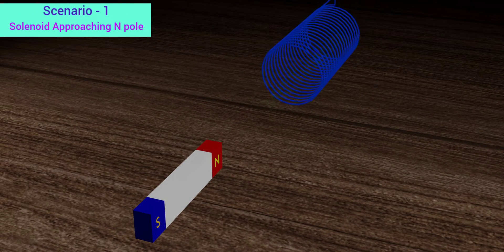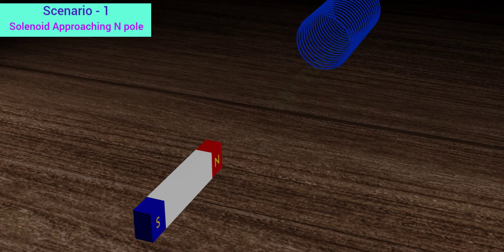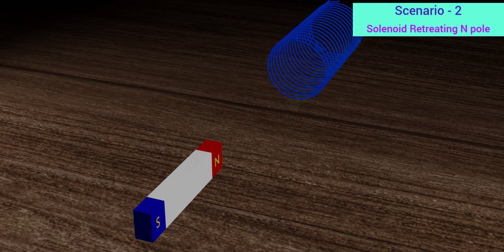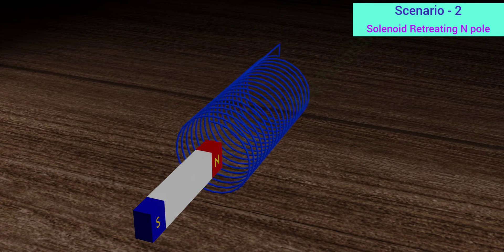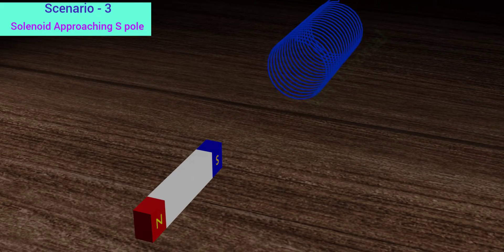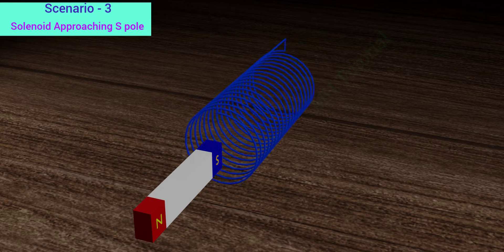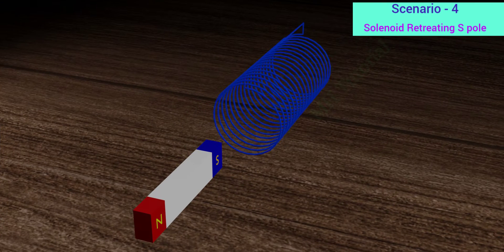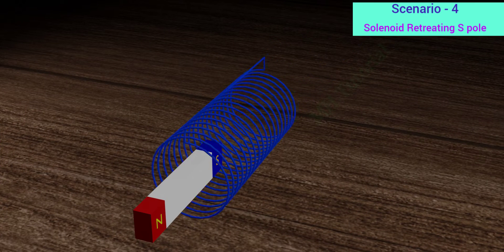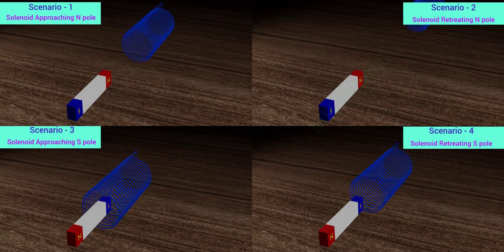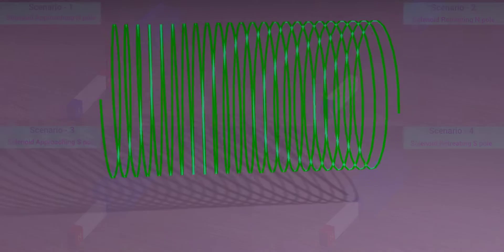In the first situation, say the solenoid approaches the north pole of the magnet. In our second situation, the solenoid moves away from the north pole of the magnet. In the third scenario, let the solenoid approach the south pole of the magnet. And in the fourth and last scenario, the solenoid is moving away from the south pole of the magnet.